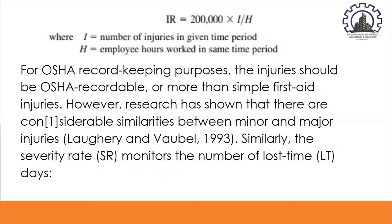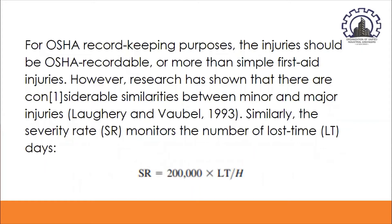For OSHA record-keeping purposes, injuries should be OSHA recordable — more than simple first-aid injuries. Research has shown considerable similarities between minor and major injuries. The severity rate monitors the number of lost time days. The formula is: severity rate = 200,000 × lost time / hours worked in the same period by the worker.